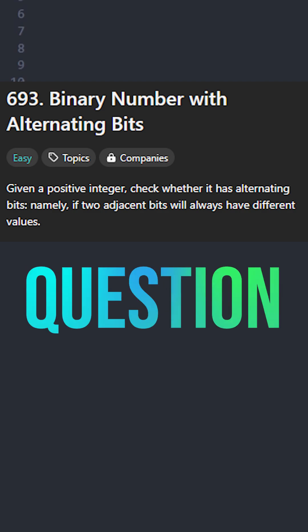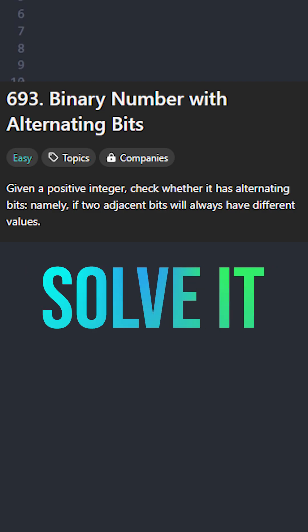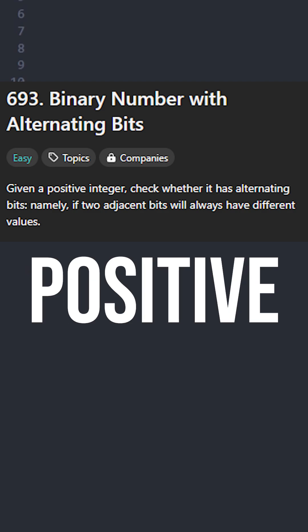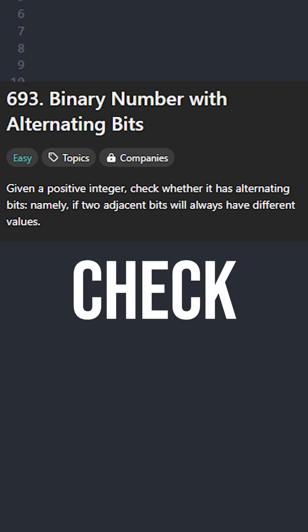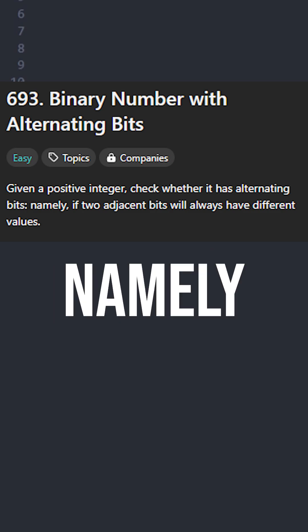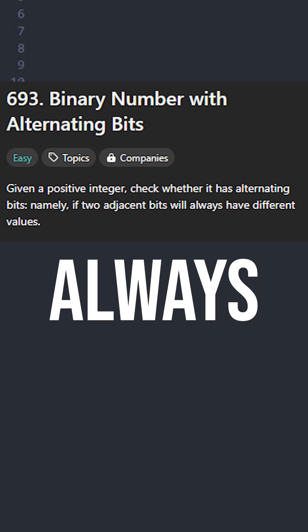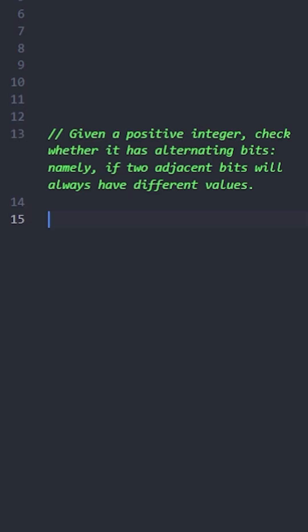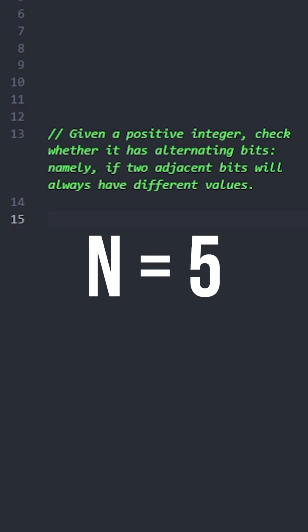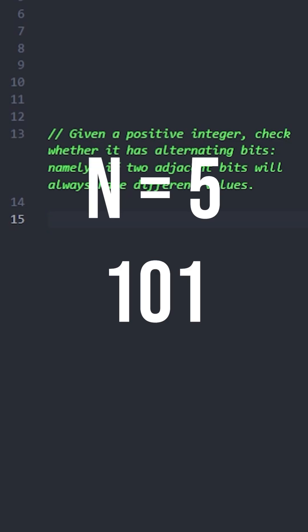Here's an easy level LeetCode question. Given a positive integer, check whether it has alternating bits — namely, if two adjacent bits always have different values. For example, if n equals 5, its binary representation alternates between 1 and 0, so it would return true.